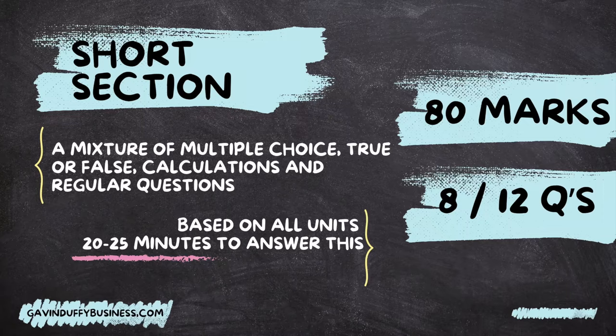In the short section, there are going to be 12 shorts and you have to answer 8. It's unlikely there'd be a question from the Enterprise chapter because that's in the ABQ. So you're looking at 12 shorts and 6 units — about two questions per unit, although it's likely they'll weight it towards units 5, 6, and 7, just away from the ABQ one.